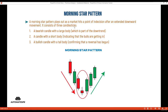It consists of three candlestick patterns: a bearish candle with a large body, which is part of the downtrend, then a candle with a short body indicating that the bulls are getting in, and then a bullish candle with a tall body confirming that a reversal has begun.